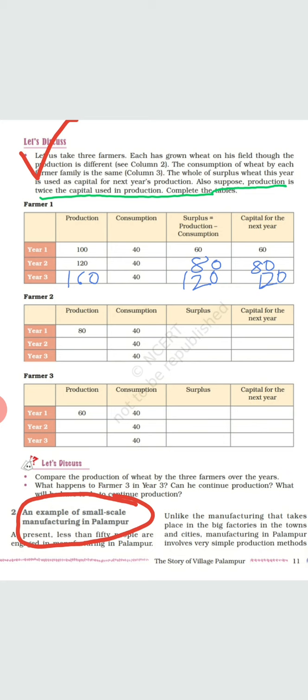For Farmer 1, Year 1 production is 100 and consumption kept for the family is 40. Surplus formula is production minus consumption: 100 minus 40 equals 60. So the capital in hand for the next year is 60. Production is twice the capital, so 60 into 2 is 120. Year 2 production will be 120. Consumption is 40, so surplus is 120 minus 40 equals 80. Capital in hand for next year is 80.